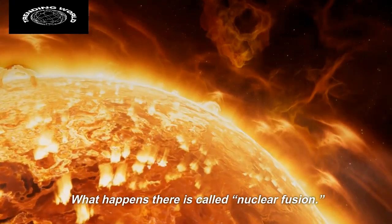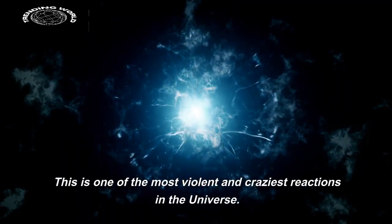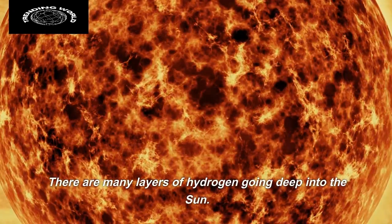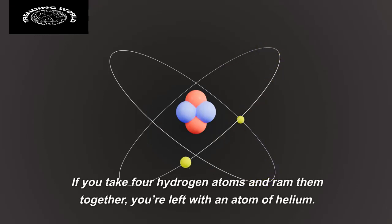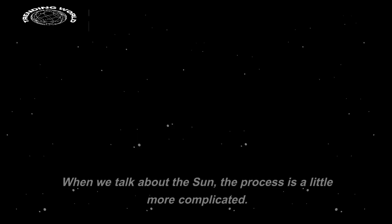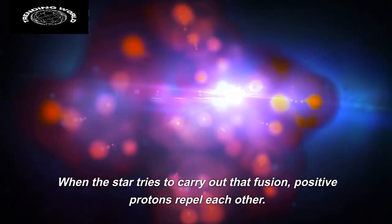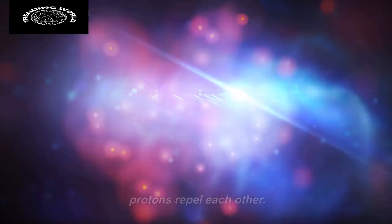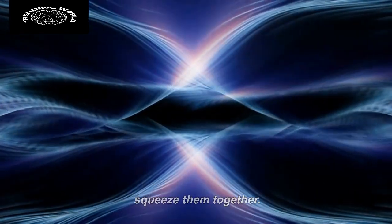What happens there is called nuclear fusion. This is one of the most violent and craziest reactions in the universe. There are many layers of hydrogen going deep into the sun. If you take four hydrogen atoms and ram them together, you're left with an atom of helium. When we talk about the sun, the process is a little more complicated. When the star tries to carry out that fusion, positive protons repel each other. It takes a lot of force and energy to somehow squeeze them together.